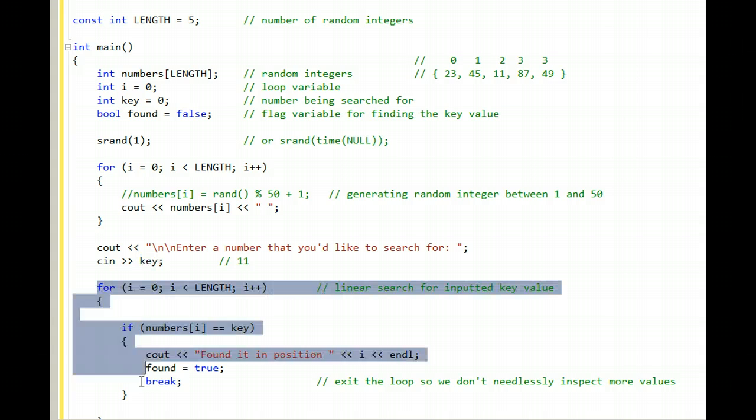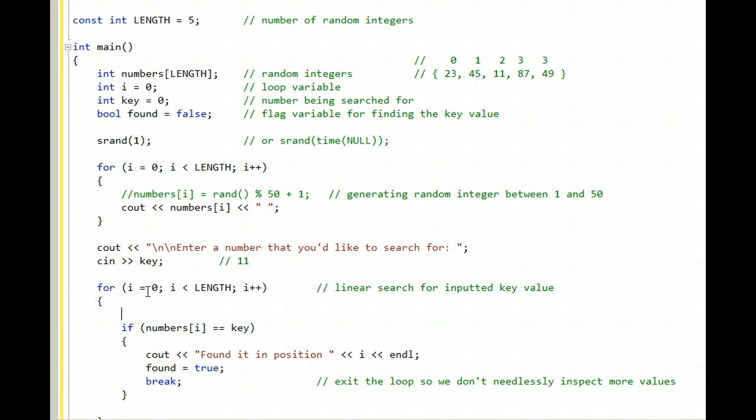And another for loop iterates over and over again. This for loop traverses the array from position 0, and it checks to see if the number stored in position 0.